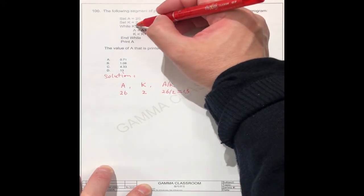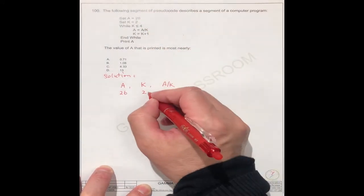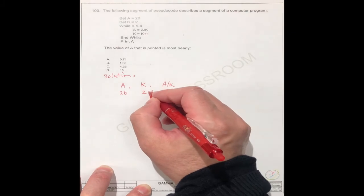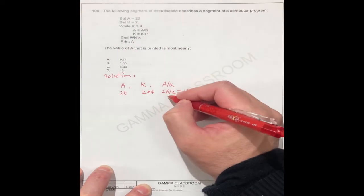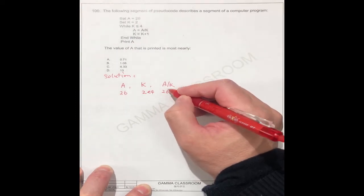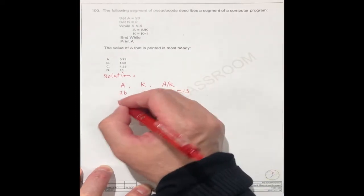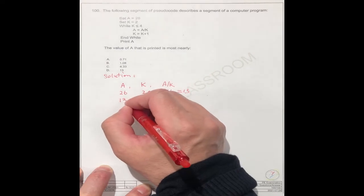This is the first step. Because k is less than 4, so a is to this one. So a is 13, the second step.